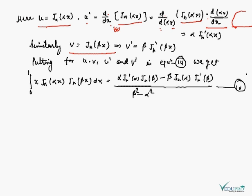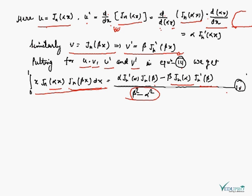In a similar way, differentiating v with respect to x gives v' = β·J_n'(βx). By substituting u, v, u', and v' into the equation, we get: ∫₀¹ x·J_n(αx)·J_n(βx) dx = [α·J_n'(α)·J_n(β) − β·J_n(α)·J_n'(β)] / (β² − α²). We take this as equation four.